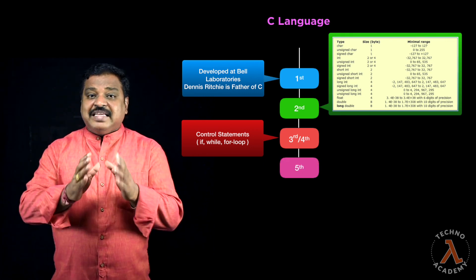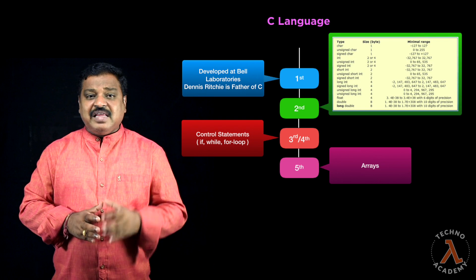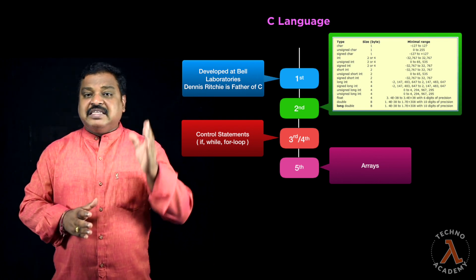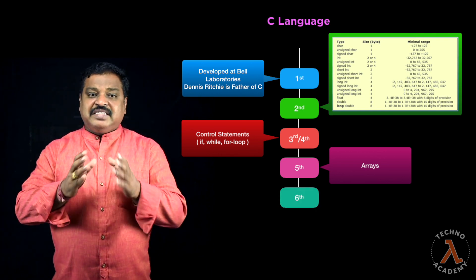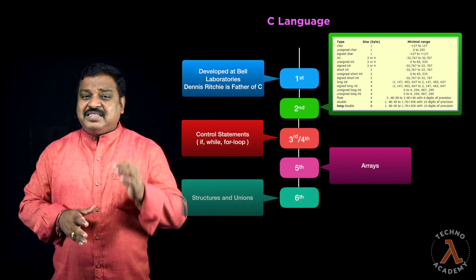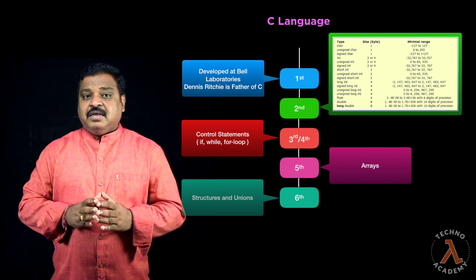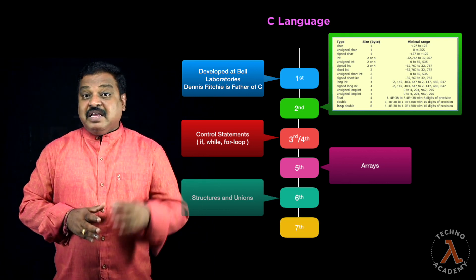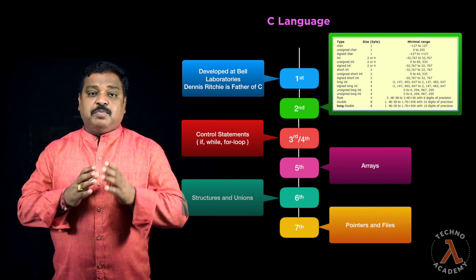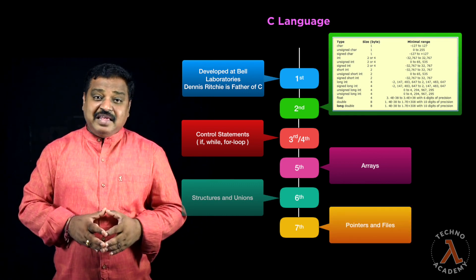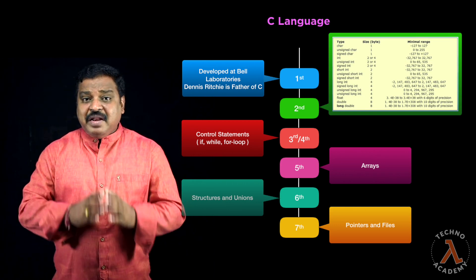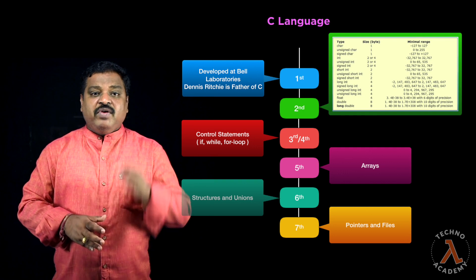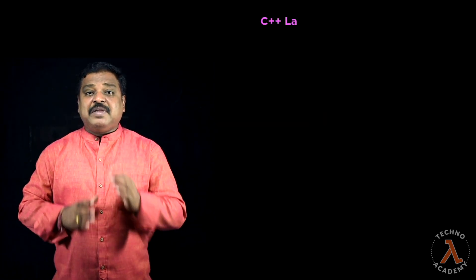Fifth week they enter into arrays, enjoying single, two, and multi-dimensional arrays. Sixth week they start with structures and unions, and start feeling that C language is also complex. Seventh week they start with pointers and files — no one understands anything. Eighth week the course is completed, and immediately students enquire about the next C++ batch and join it.